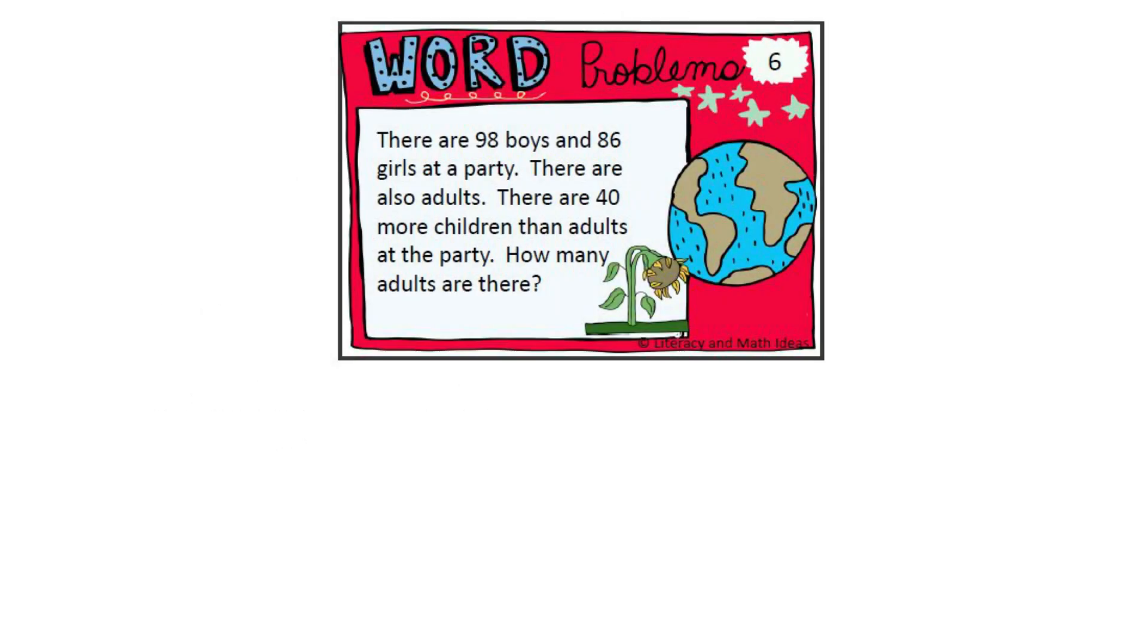This question says: there are 98 boys and 86 girls at a party. There are also adults. There are 40 more children than adults at the party. How many adults are there?